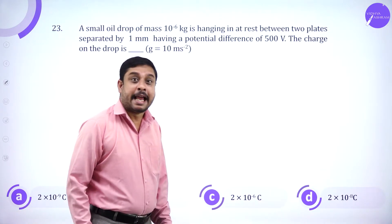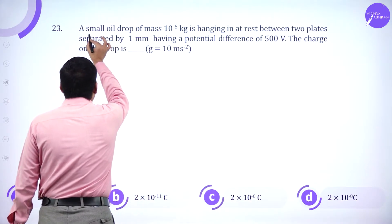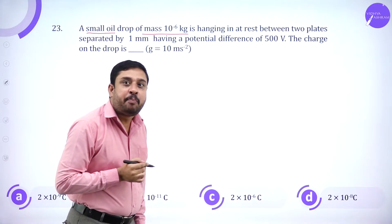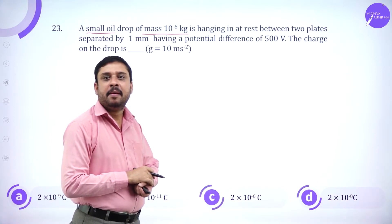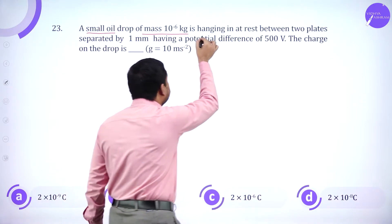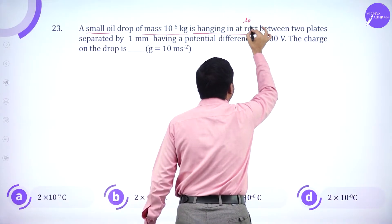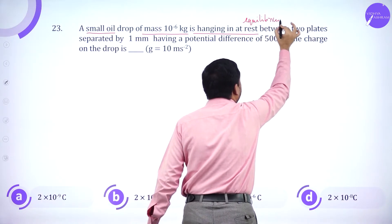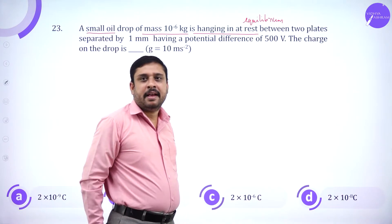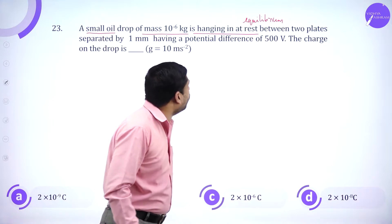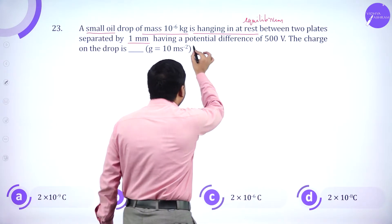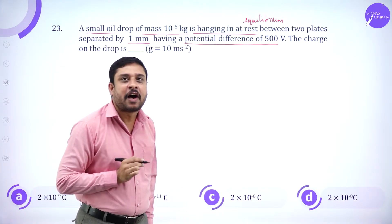Next one. Now this is from the electric current part, the electrostatic part. A small oil drop of mass 10 power minus 6 kg is at rest, separated by 1 mm distance, having a potential difference of 500 volts.